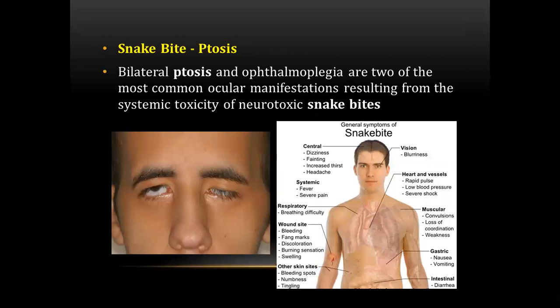The first question was about snake bite. They asked about the symptoms of snake bite and showed a figure of ptosis. Bilateral ptosis and ophthalmoplegia are two of the most common ocular manifestations resulting from systemic toxicity of neurotoxic snake bites.